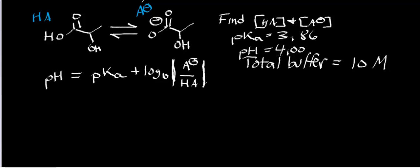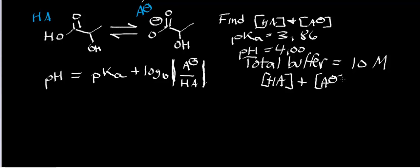Another piece of information they'll have to give you in these types of problems is the total concentration of all species in the buffer. In this problem the buffer's concentration is 10 molar. That means the concentration of HA plus the concentration of A- has to sum to 10 molar, and that's a very important consideration. The concentration of the conjugate acid plus the concentration of the conjugate base has to be 10 molar.